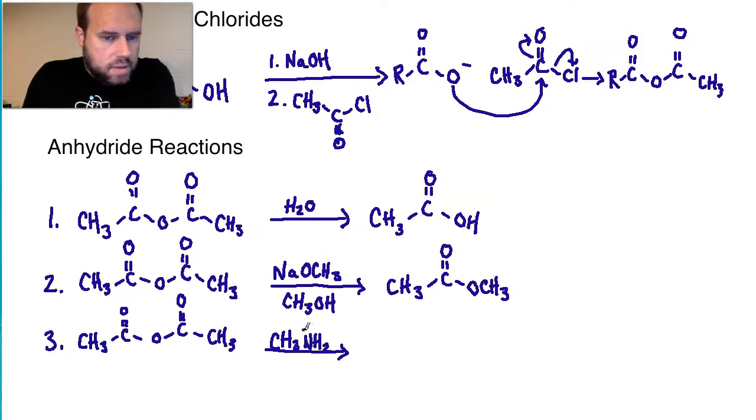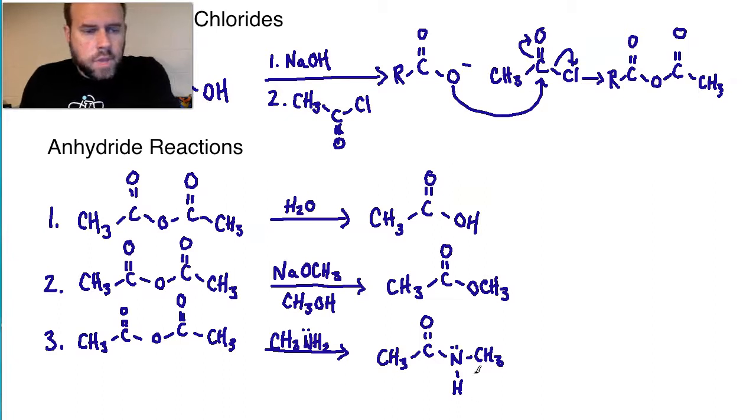And with methylamine, what we would end up with is this nitrogen would come in, it would attack the carbonyl, and it would displace the leaving chunk that is resonance stabilized. And so you would get a resulting amide that would look as the following. You'd have the first portionality from your anhydride, and then you would have, in this case, NHCH3, and you have an amide as your final result there.